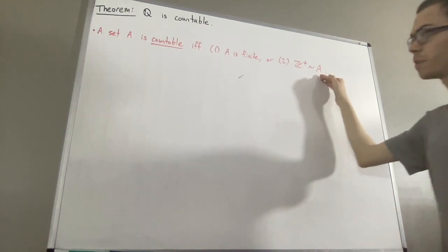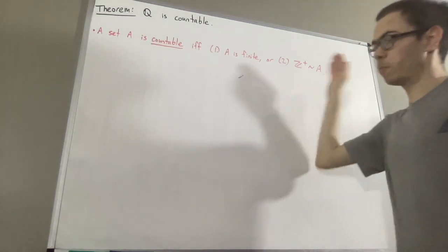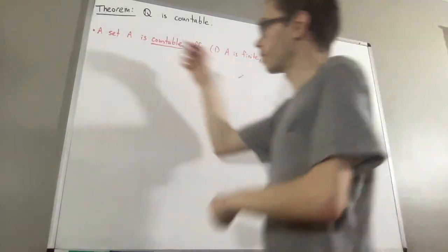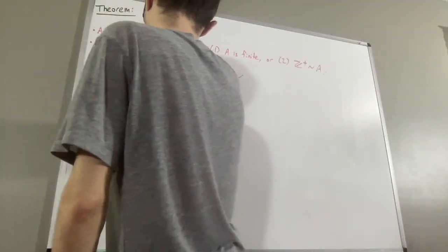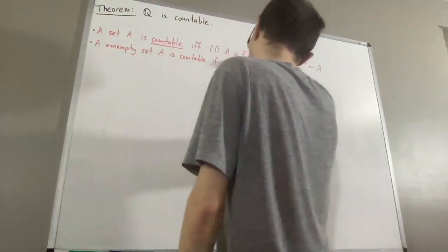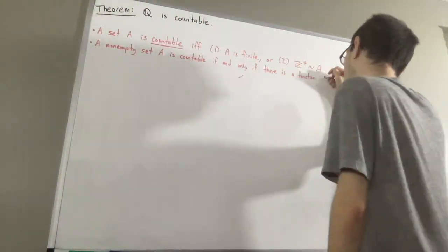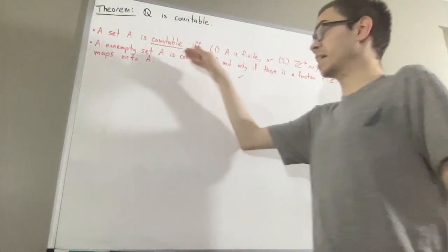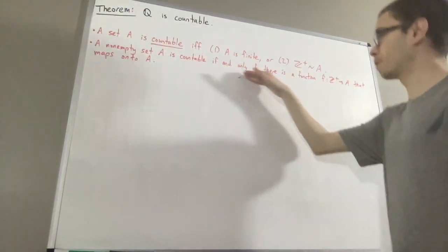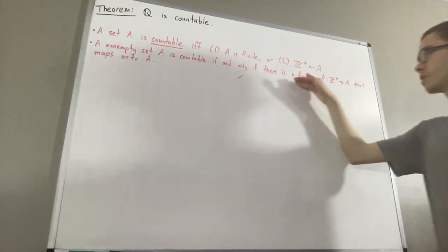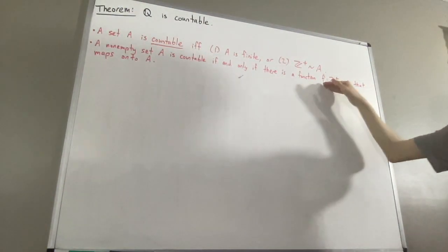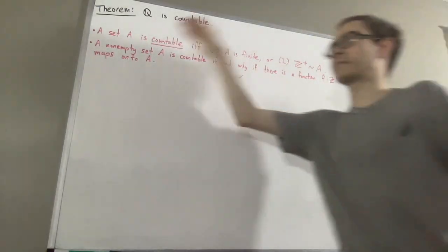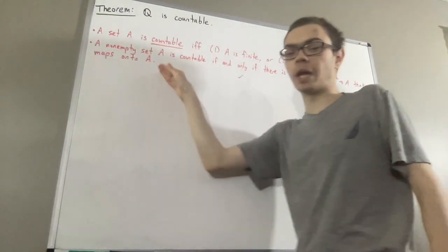A property about countable sets that we have proven is the following: a nonempty set A is countable if and only if there is a function f from the set of positive integers to A that maps onto A.